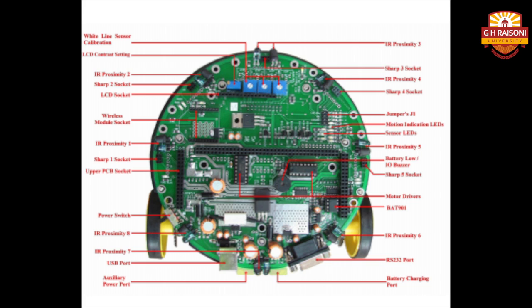This is the top view of the main board. The various components like sensors, auxiliary power port, USB port, LCD control sensing, IR buzzer, etcetera are already explained in the previous lecture modules.